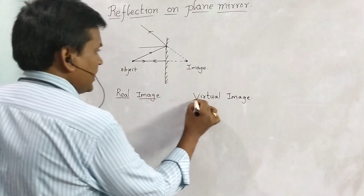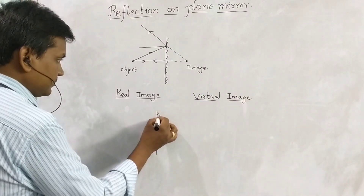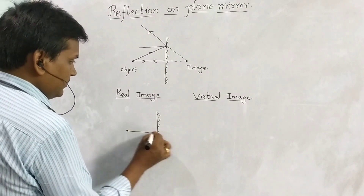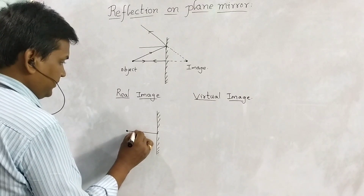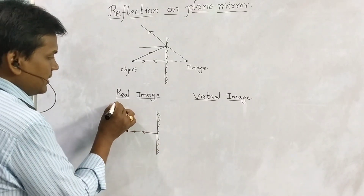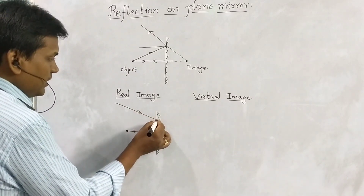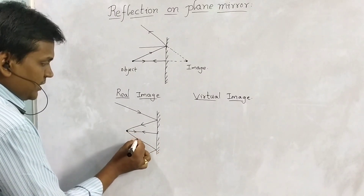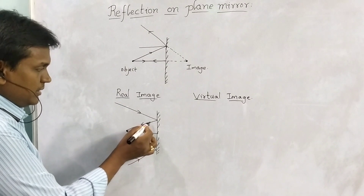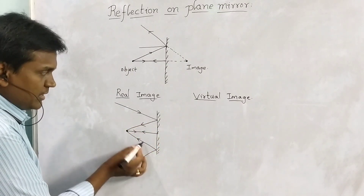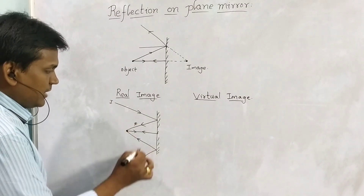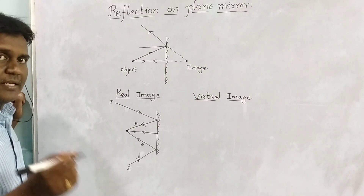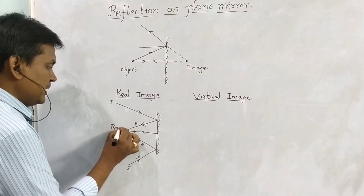Now coming to real image and virtual image. For a real image, consider a mirror and a point. Another ray incident on the mirror will also meet at the same point. These two reflected rays are really meeting here, so a real image is formed.